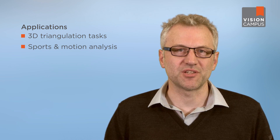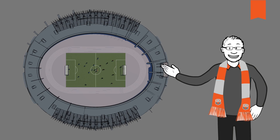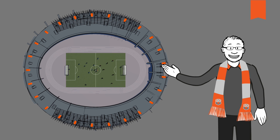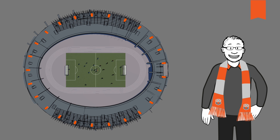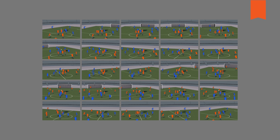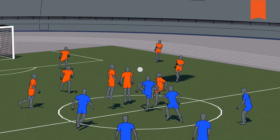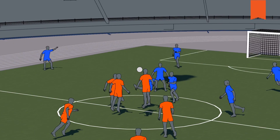Applications that require synchronized image capturing between multiple cameras can range from 3D triangulation tasks, to sports and motion analysis, to monitoring applications for conveyor belts. Take soccer for example. In many modern stadiums there are several cameras that capture the soccer game from different angles. The different cameras all capture an image at exactly the same time, and those synchronized images are then put together into one 3D image, giving you a 360-degree view of the game — a nice gimmick for fans, but a handy analysis tool for the coach.